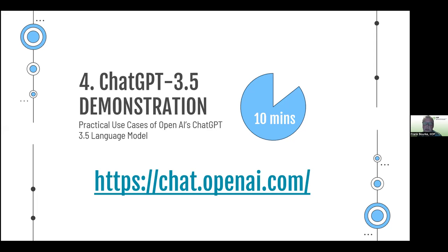You may have noticed that the outputs didn't list the sources the information came from — that's one of the main weaknesses of ChatGPT and other models. There are some that do provide sources but you typically need to pay for them, or they're in beta, such as Google's new Search Generative Experience, or SGE, which will likely replace the current Google search application.